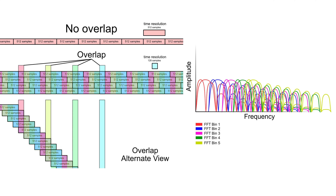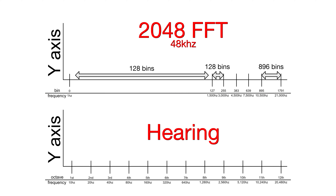Let's talk about how Spiff works. In order to understand Spiff, we need to understand human hearing. The most basic tenet of musical hearing is the octave. Essentially, we take a frequency like 10 hertz, and in order to jump up an octave, we double that frequency. In order to jump up another octave, we double it again.